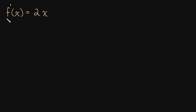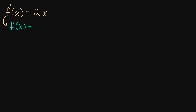Suppose the derivative of a function is 2x, and I want you to tell me what the original function is — what is f of x? We have to ask ourselves: what do we take the derivative of to get 2x? What we take the derivative of is x squared. If we take the derivative of x squared, we get 2x.